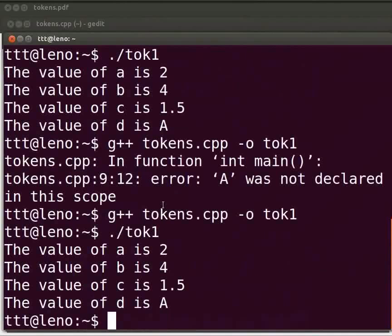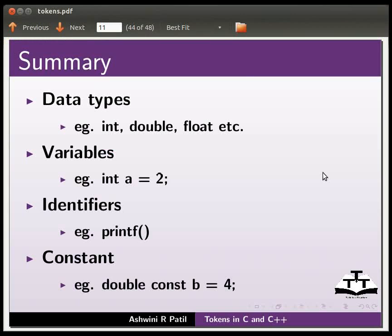Now switch back to our slides. Let us summarize. In this tutorial, we learned data types like int, double, float, etc. Variables, for instance, int a equals 2. Identifiers like printf. And what is a constant, for instance, double const b equals 4.